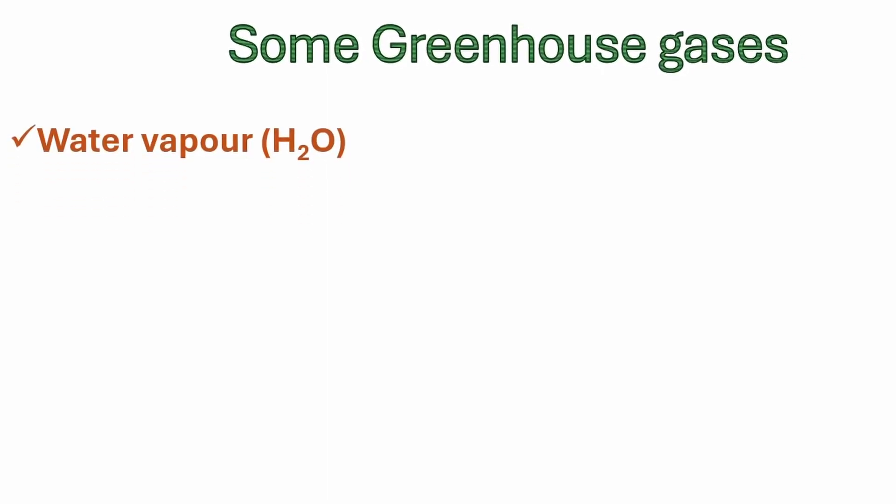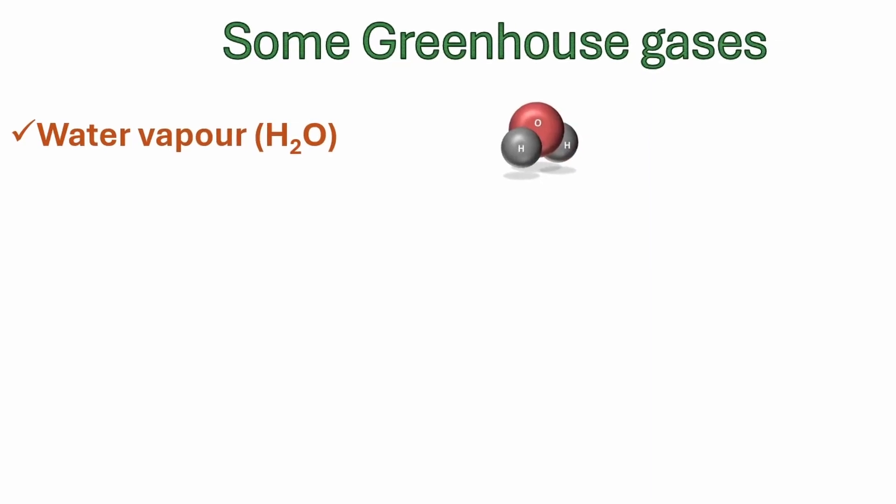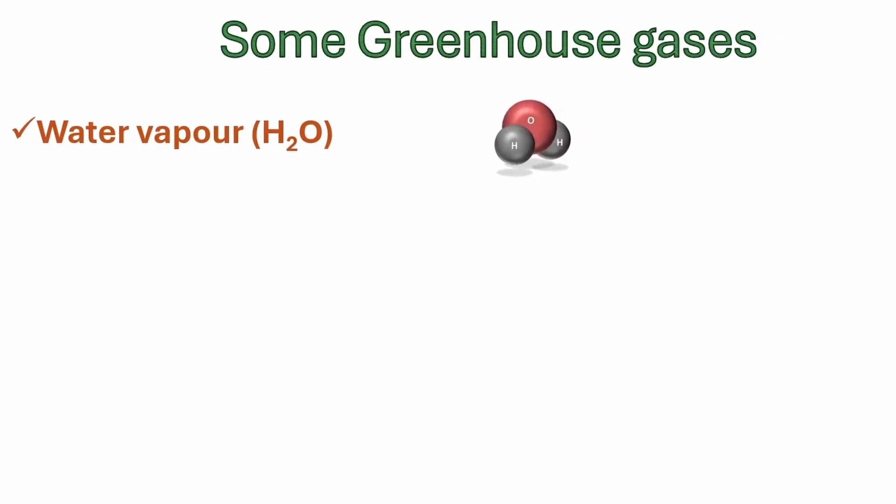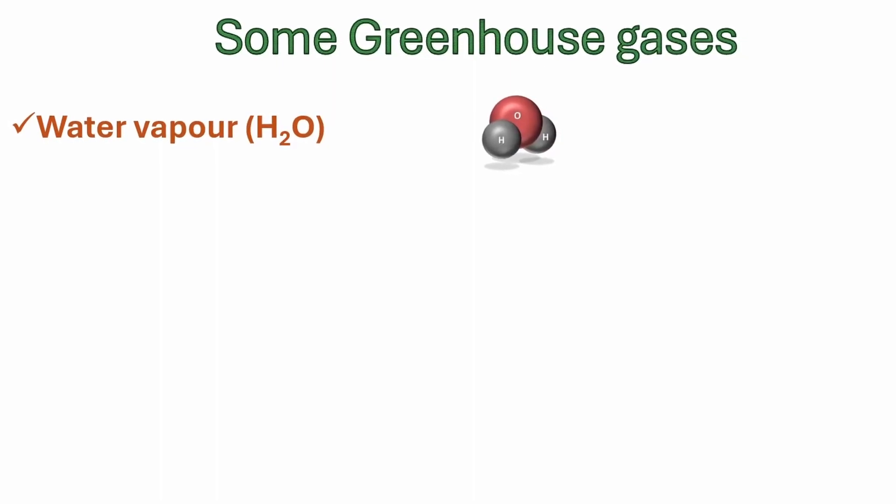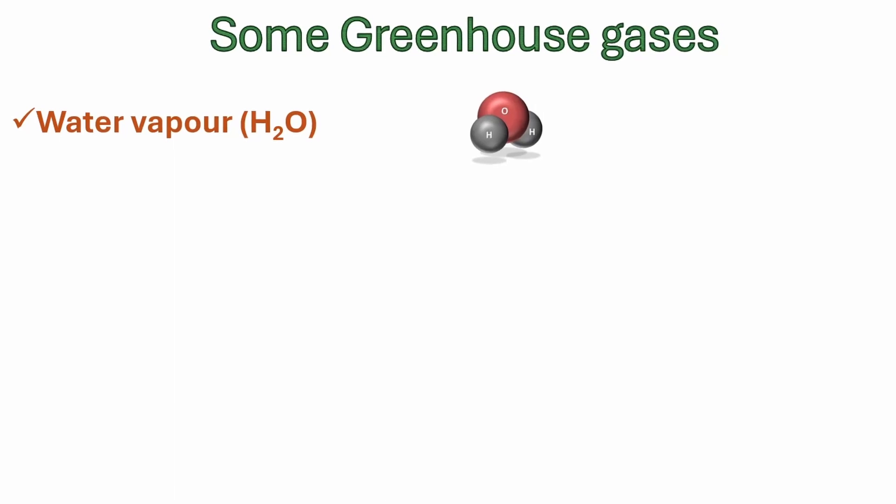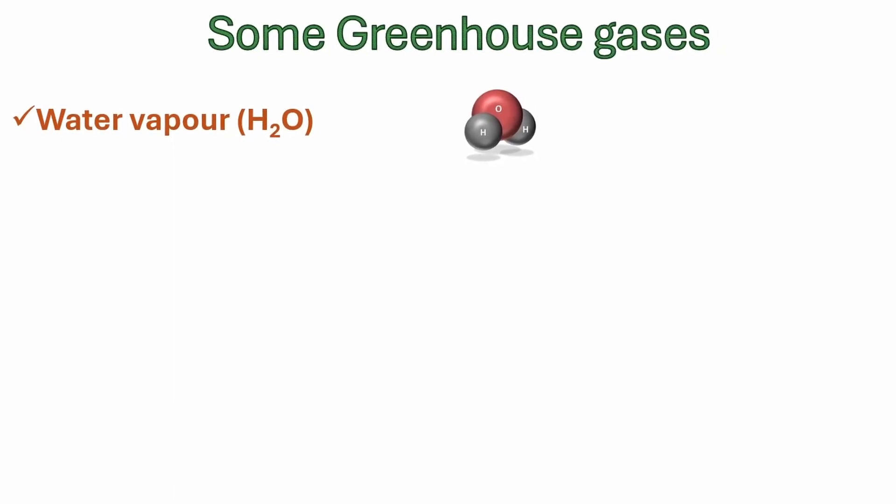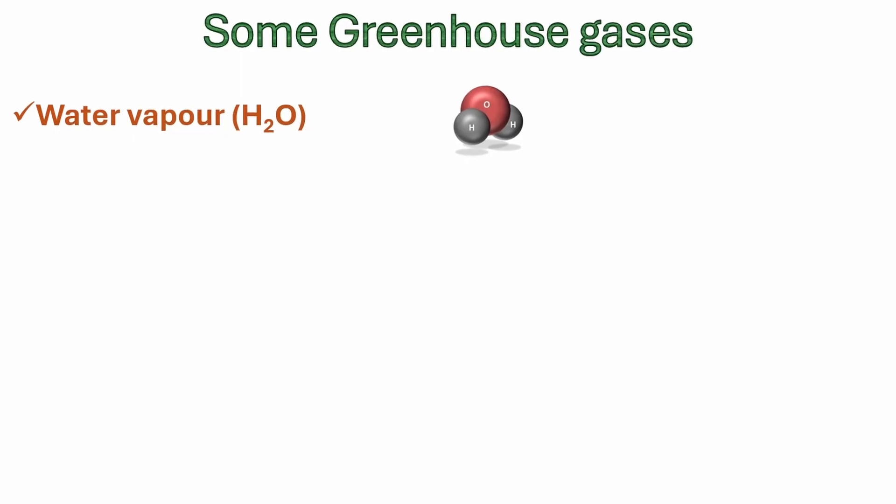Some of the main greenhouse gases are water vapor, the most abundant and variable greenhouse gas in the atmosphere. It is produced by evaporation from oceans, lakes, rivers, and plants. It also forms clouds which are responsible for reflection and absorption of solar radiation.